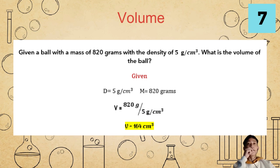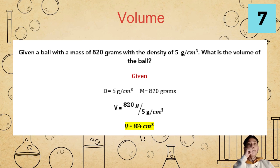Here's our last example for volume: given a ball with a mass of 820 grams and a density of 5 grams per cubic centimeter, what is the volume of the ball? Given: density equals 5 grams per cubic centimeter, mass equals 820 grams. Using volume equals mass over density, we substitute: volume equals 820 grams over 5 grams per cubic centimeter, and volume equals 164 cubic centimeters.